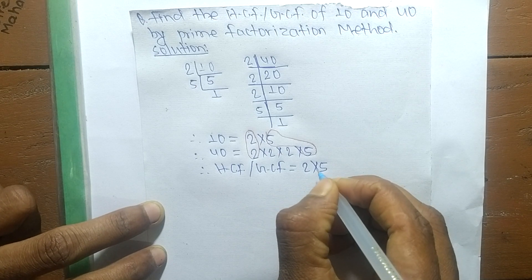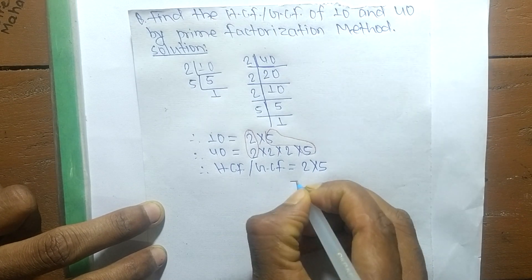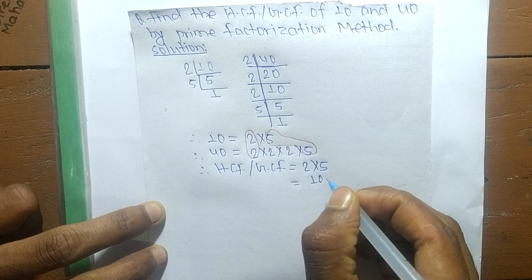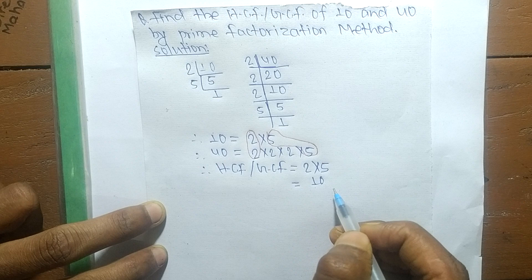This means the product of the common factors, so it equals 10. Therefore, the HCF or GCF of 10 and 40 is 10.